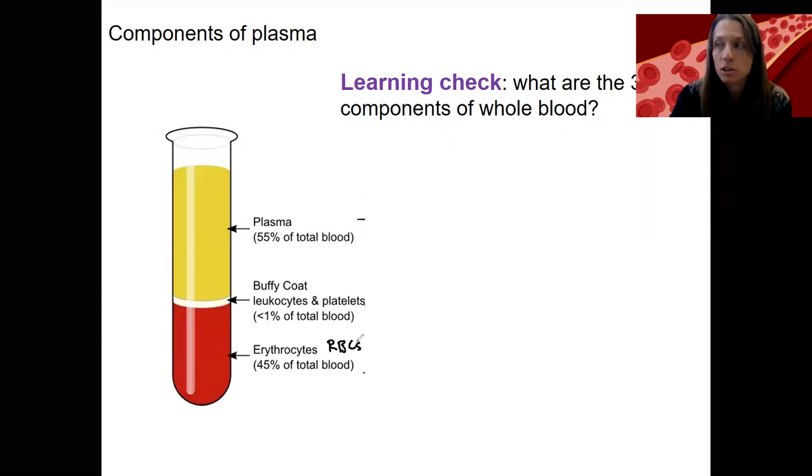So now what I want to do is break down the components of plasma, this one right here, and tell you about the things that are in it. So plasma is mostly water. This is where the water compartment of your blood is. So remember, extracellular fluid is either interstitial fluid or plasma.